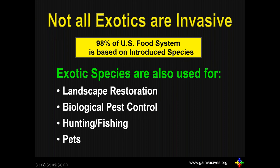Not all exotics are invasive. Most of our food — 98% — is from introduced species. They're also used for things like landscape restoration, biological pest control, and hunting and fishing. That's how hogs were brought in and deliberately released many times for hunting. They're also brought in as pets. The house cat was not originally native to this continent, and it is devastating to songbirds and other animals when cats are allowed to run free. Cats are actually considered one of the top 10 worst invasive species in the world.